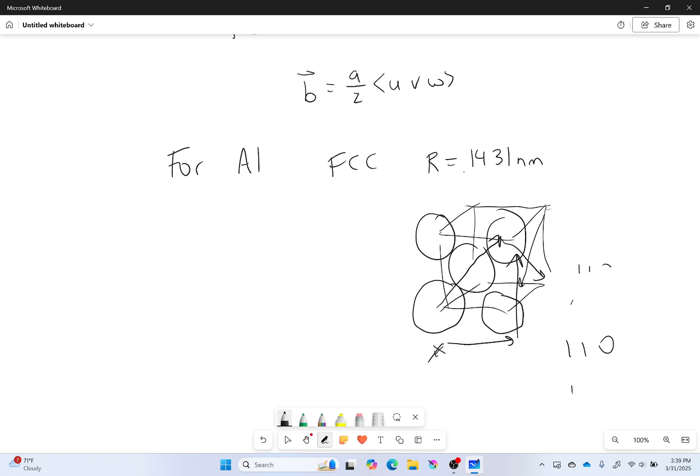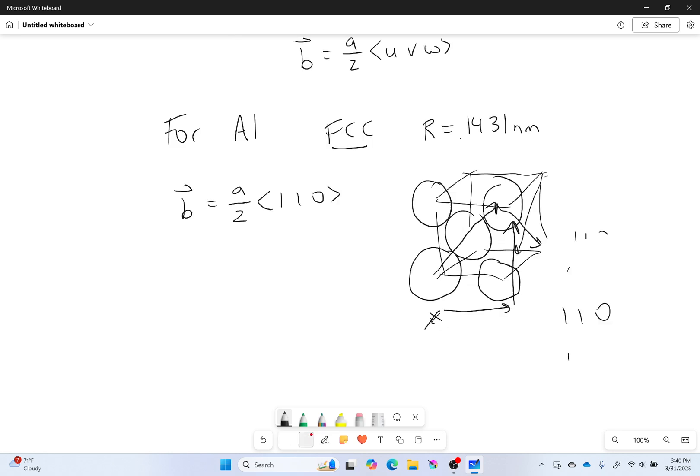So then, for aluminum, because it's face-centered cubic and that's the closest-packed direction, our Burgers vector would look something like this. Now we need to figure out what A is. And A is the length of a side of our unit cell.